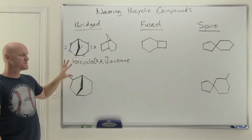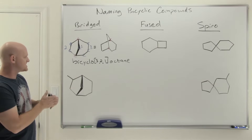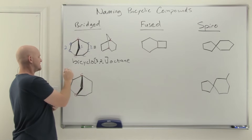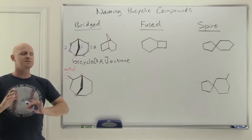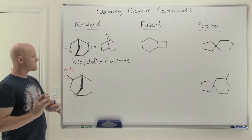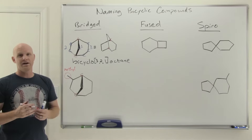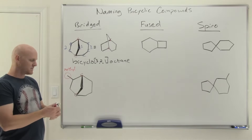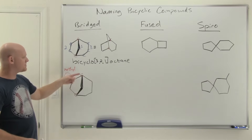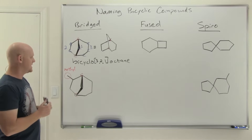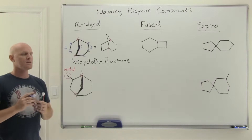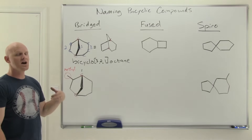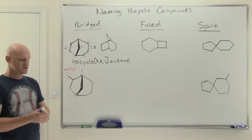What happens when you get substituents? You name them the same way as with regular alkanes — put them at the beginning of the name before the parent, but you have to give the appropriate locant number, which means learning how to number these as well. You always give one of the bridgehead carbons atom number one. Then you number through the longest chain of carbons from bridgehead to bridgehead first.